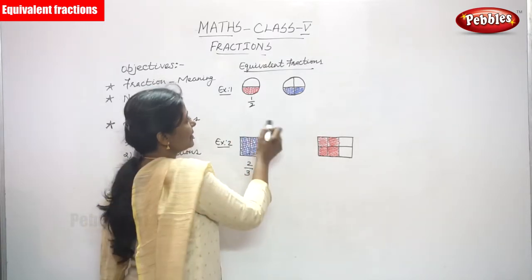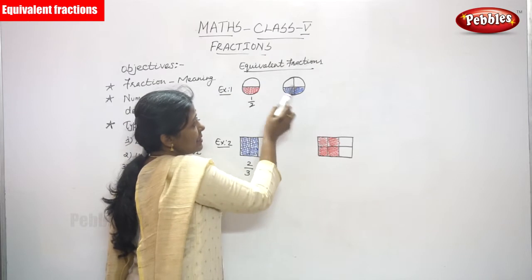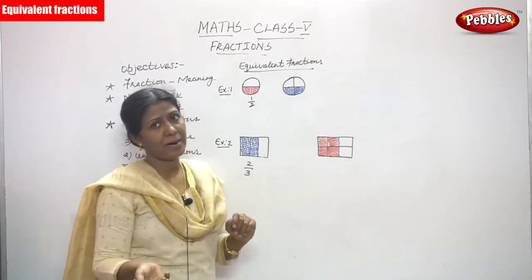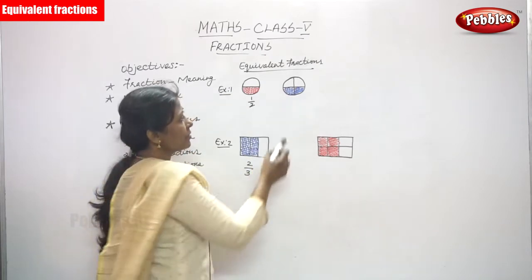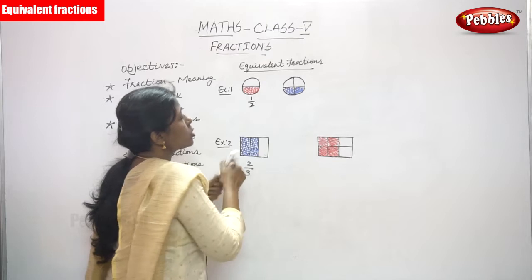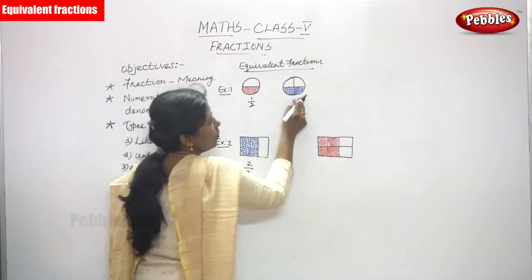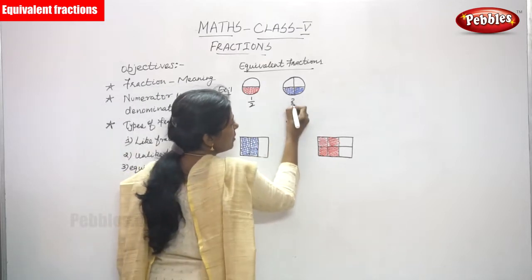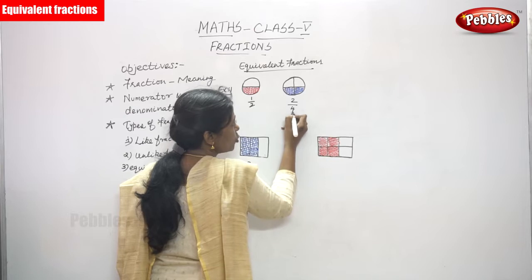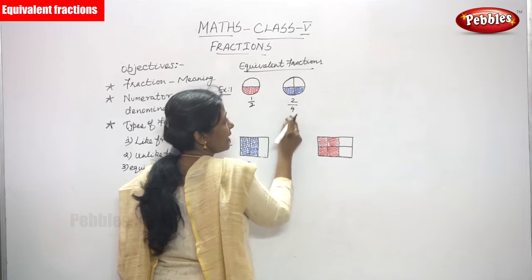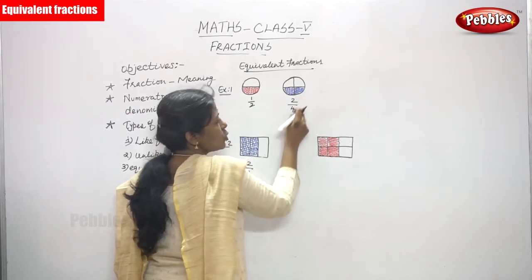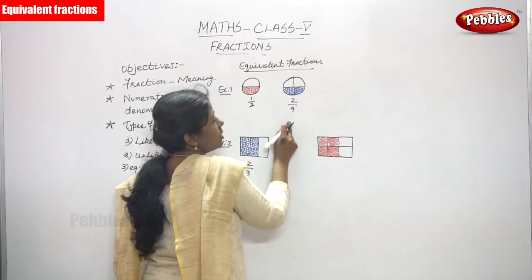After that I cut the circle into four equal parts, then I shaded two portions. So what is the fraction of this circle? 2 by 4.